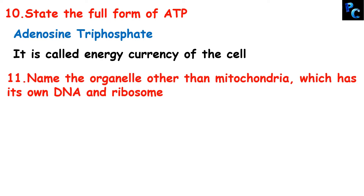Name the organelle other than mitochondria which has its own DNA and ribosome. The answer is plastids. Both mitochondria and plastids have their own DNA and ribosomes.